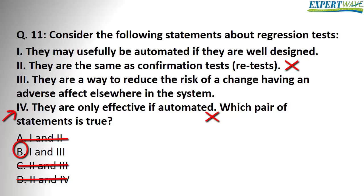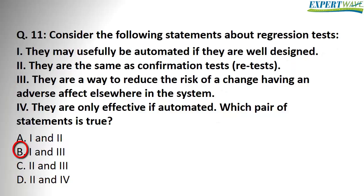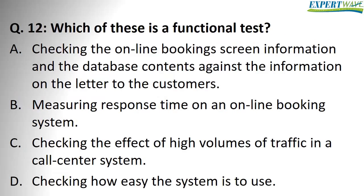Let's confirm: option four — they are only effective if automated — this is also wrong, because regression testing doesn't have to be automated. Options one and three are true: they may usefully be automated if well designed, and they are a way to reduce the risk of a change having an adverse effect elsewhere in the system. So the correct answer is B.